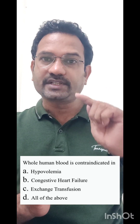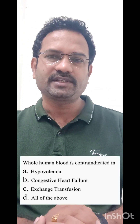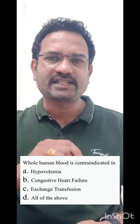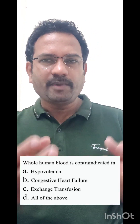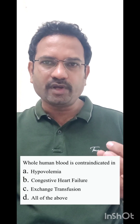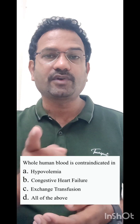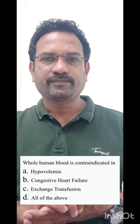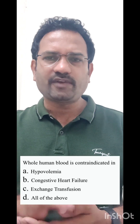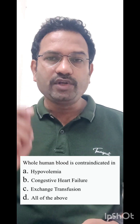So for congestive heart failure, whole human blood transfusion is contraindicated — option B is correct. Option C is exchange transfusion, a process in which blood is removed from a patient and donor blood is slowly transfused. For this, whole human blood is also used. So option D, all of the above, is not correct. The answer is option B: whole human blood is contraindicated in congestive heart failure.